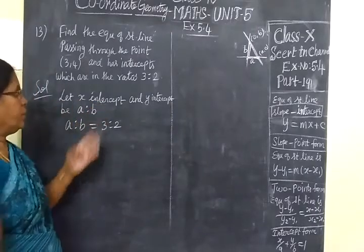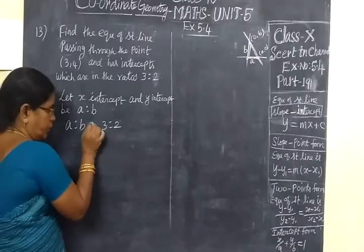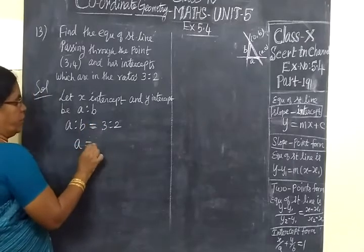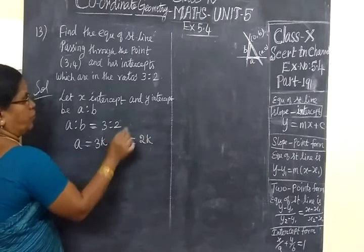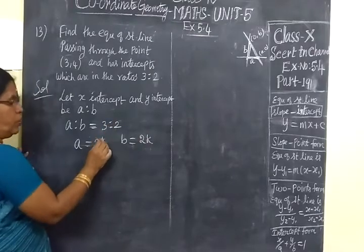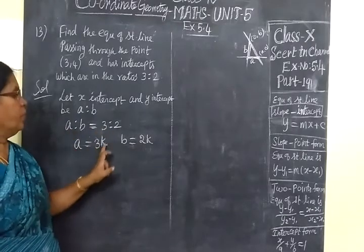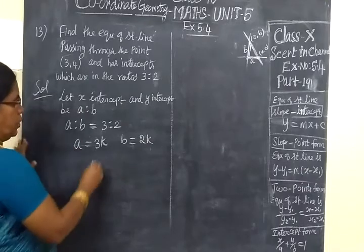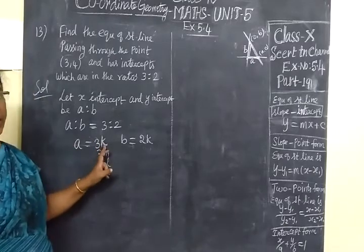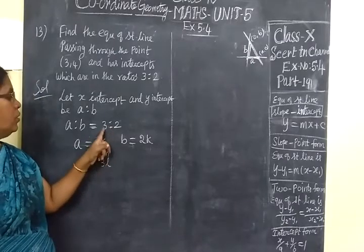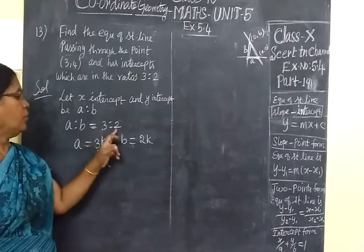Let X intercept and Y intercept be A is to B. So A is to B equals 3 is to 2. So A equals 3K, then B equals 2K. If the ratio is 3 to 1, we put constant K. Any constant value you can write here. So 3 becomes 3K, or 3M, or 3L, or 3A and so on. So B value is 2K.